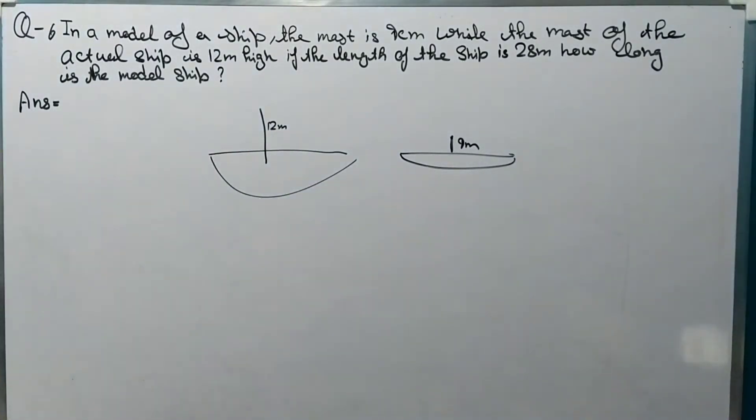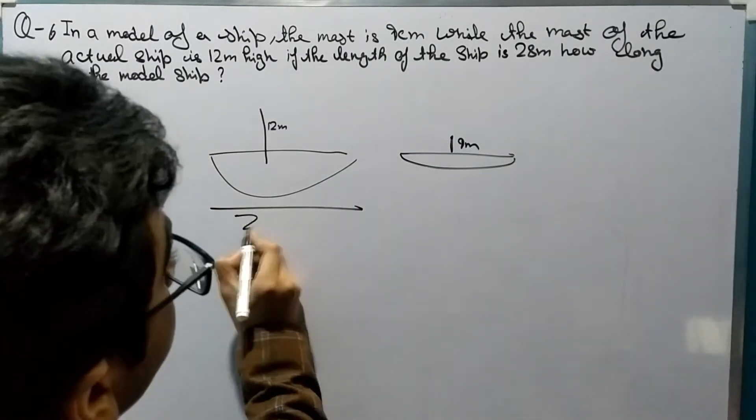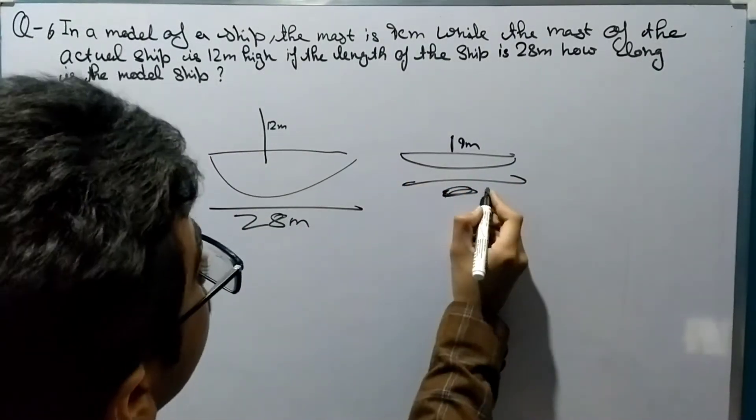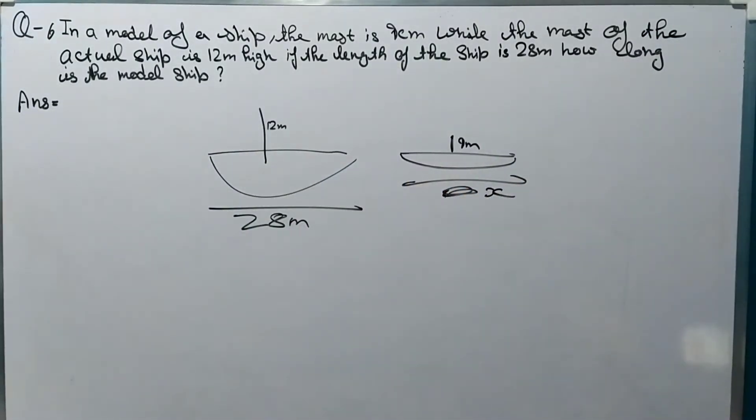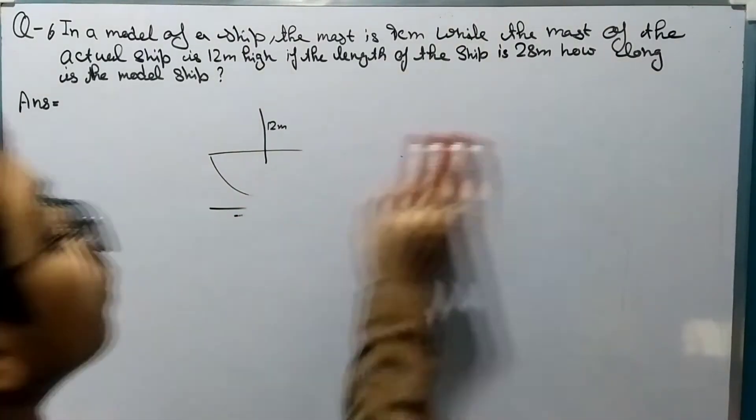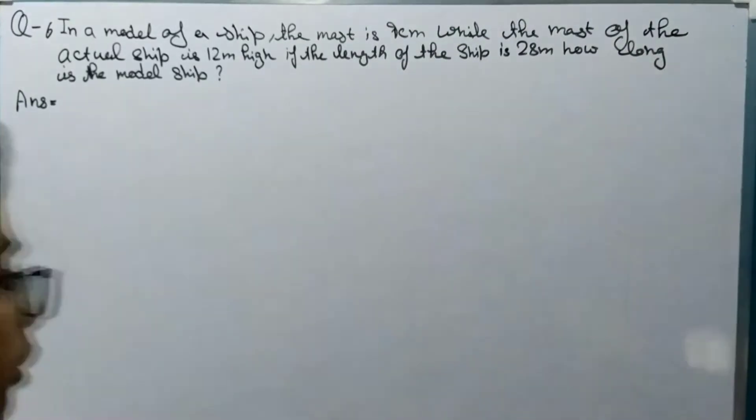And the actual length of this is 28 meter and we need to find the length here, so it will be x. And we are going to do it through the inverse proportion formula because as the mast is increasing the length is also increasing.